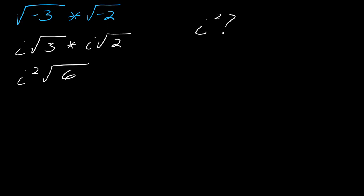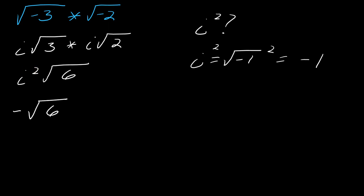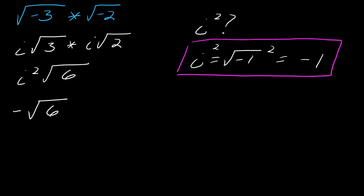We know that i equals the square root of negative 1, so if we square that, the square root cancels out and we're left with just negative 1. So i squared equals negative 1. This is actually a key fact — something you have to have memorized. i squared equals negative 1; it's kind of a big deal. So the whole expression then just equals negative square root of 6.